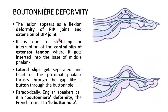It is due to the stretching or interruption of the central slip of the extensor tendon where it gets inserted into the base of the middle phalanx. The lateral slips get separated and the head of the proximal phalanx thrusts through the gap like a button through a buttonhole.